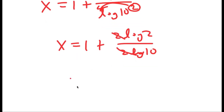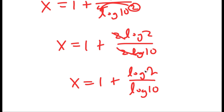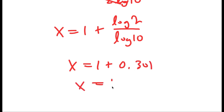The two 2s cancel out, so I get x is equal to 1 plus log 2 over log 10, which is equal to 0.301. So x is equal to 1.301.